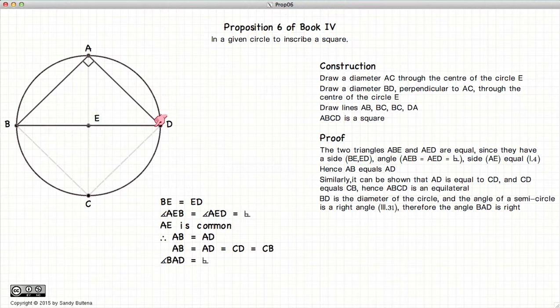Now, since BD is the diameter of the circle, the angle created in the segment has to be a right angle, according to Proposition 31 of Book 3. So the angle at A is a right angle.